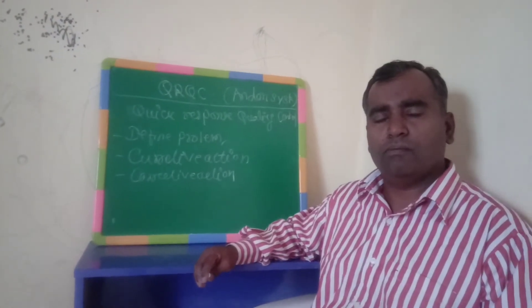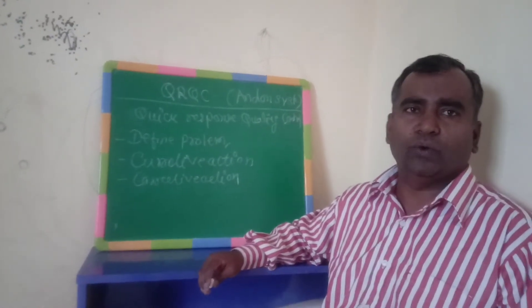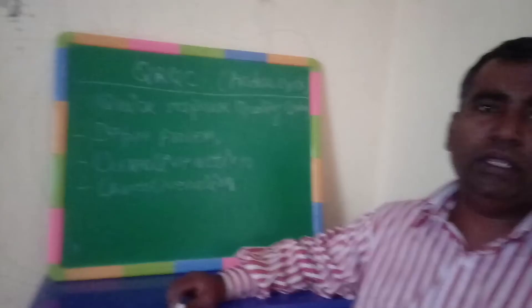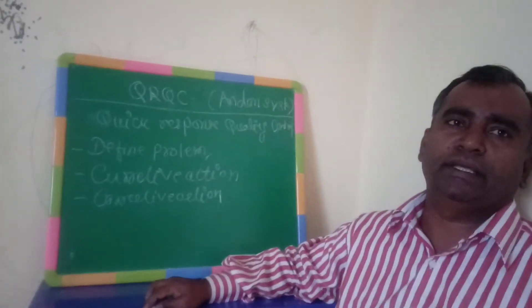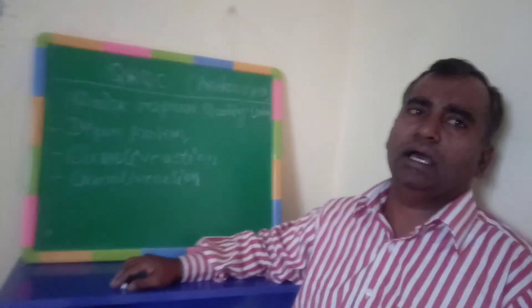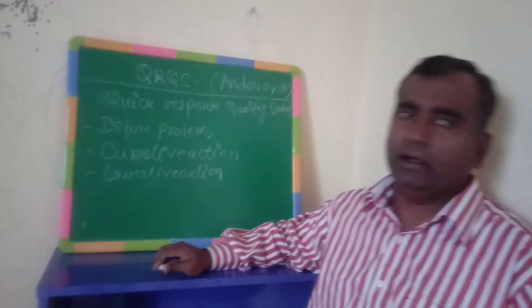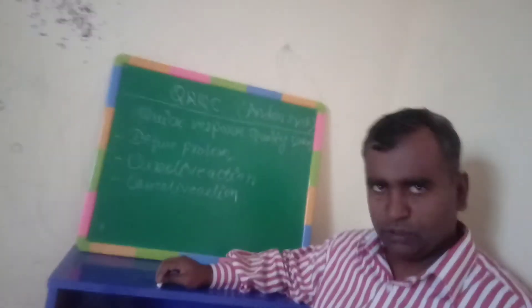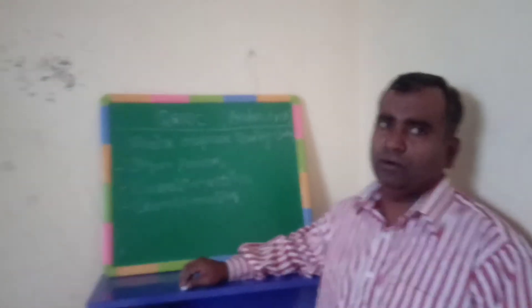There are some stages defined in QRQC. The first stage is to define the problem. The person who is working on the stage is very much aware about the issue — what issue occurred during the operations. So he has to immediately highlight the issue with the help of some indicators, a sheet, or an andon system of signals.